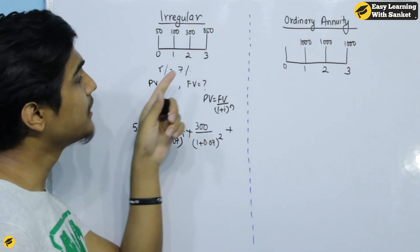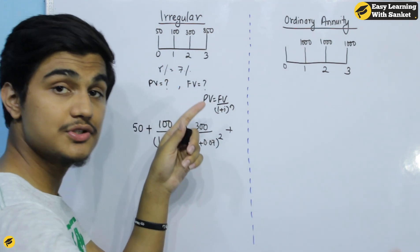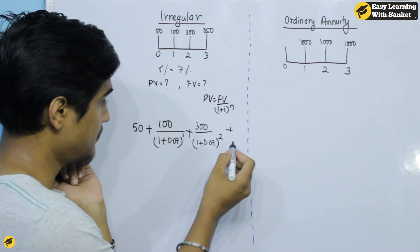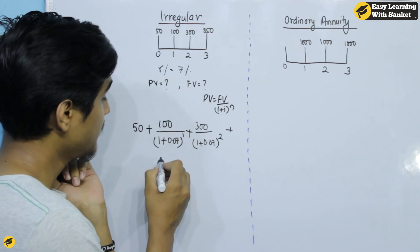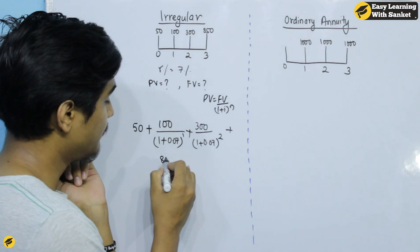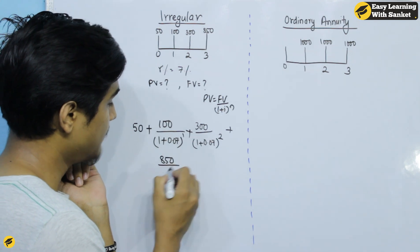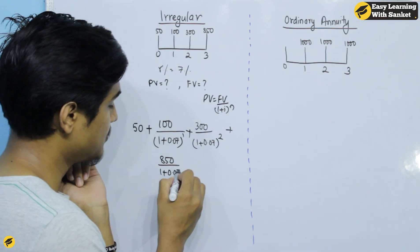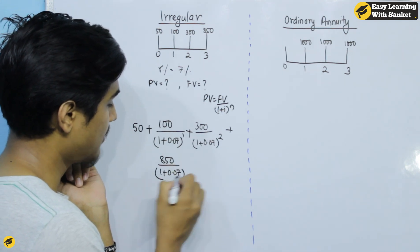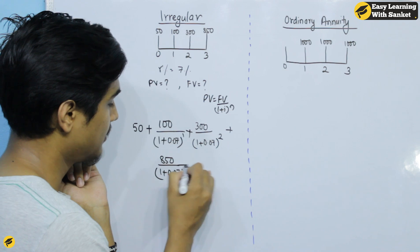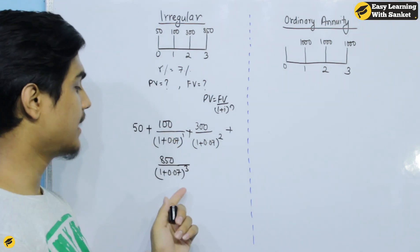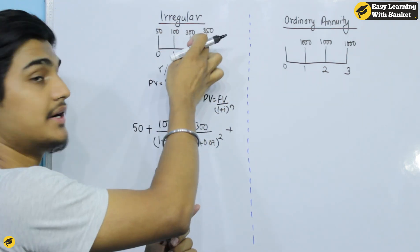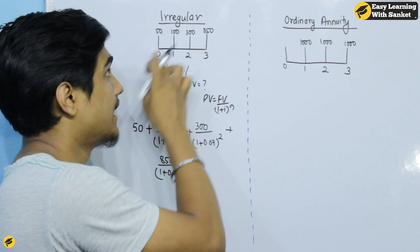For 850: divide by 1 plus 0.07 to the power 3. Each cash flow is discounted back to present value using the formula: future value divided by (1 + i) to the power n.